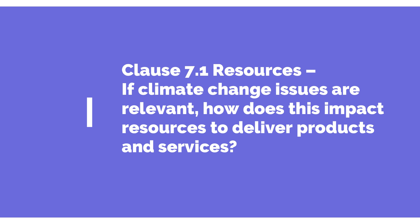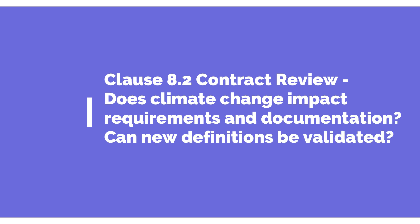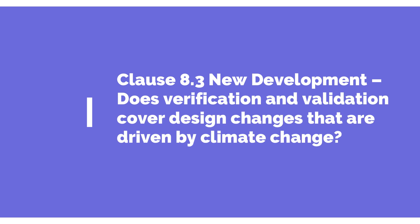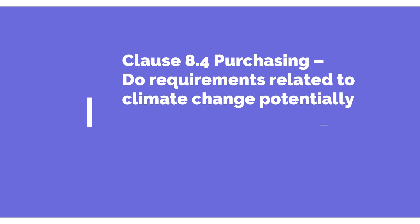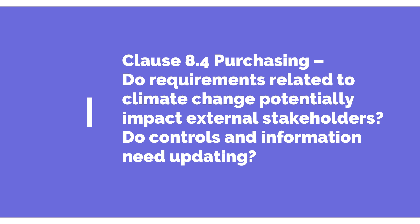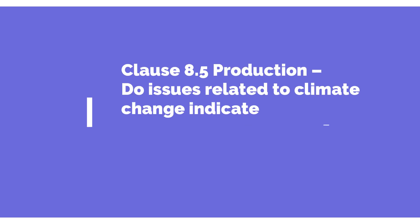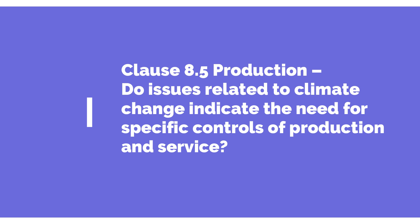Clause number 8.2, with respect to the contract review process, means that at the time of selecting a customer or new products or services, we need to understand how it is going to impact the climate and whether we have sufficient resources to handle that. Clause number 8.3 covers design and development — what kind of verification and validation we need to do with respect to design changes driven by climate change. Clause number 8.4 relates to purchasing — what actions we need to take with respect to our stakeholders. Clause number 8.5 may also be impacted regarding whether these climate change issues affect any process control. And finally, clause number 9, talking about performance evaluation, covers how we can evaluate whether we are implementing climate change requirements effectively, what the gaps are, and what can be done.